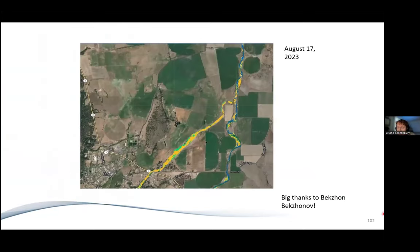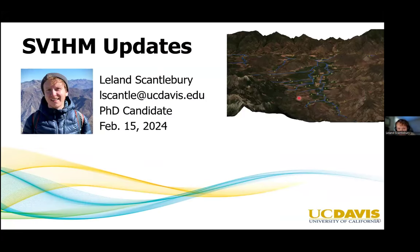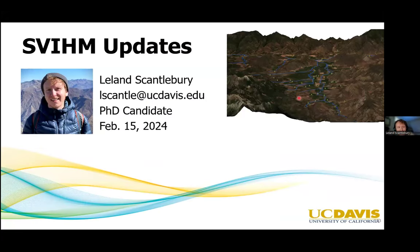Here's a quick example from August 17, 2023 — a satellite image showing water detected along the main Scott River, while Aetna Creek is fairly dry. That's the kind of output we're producing. That's all I had — those are the main SWIM updates.